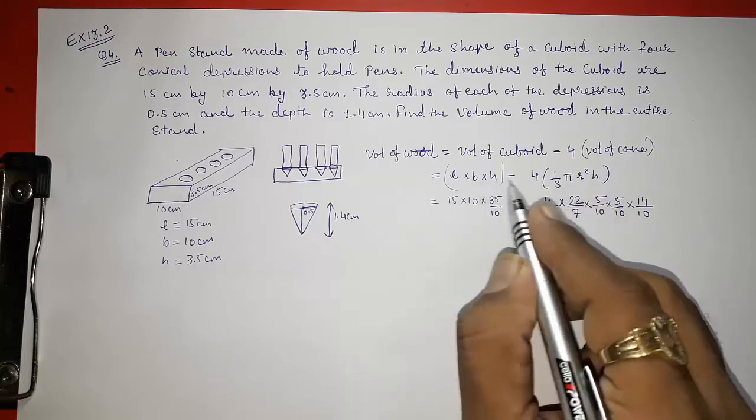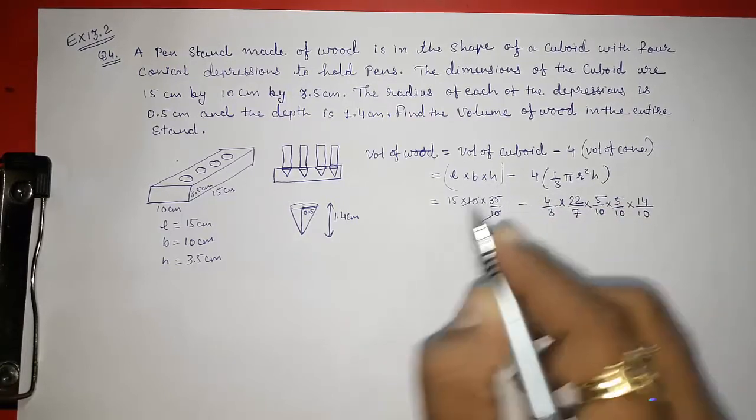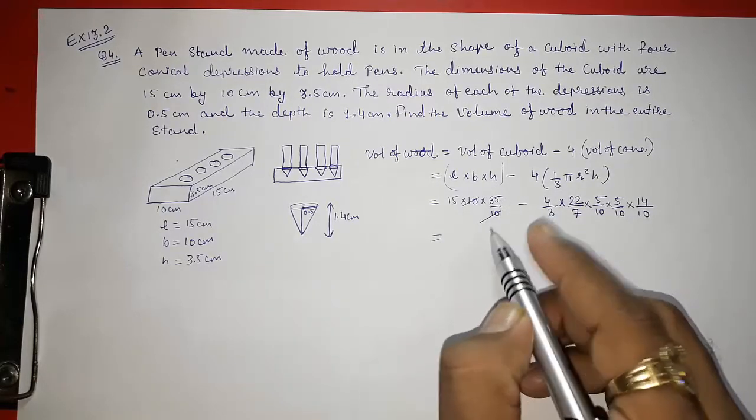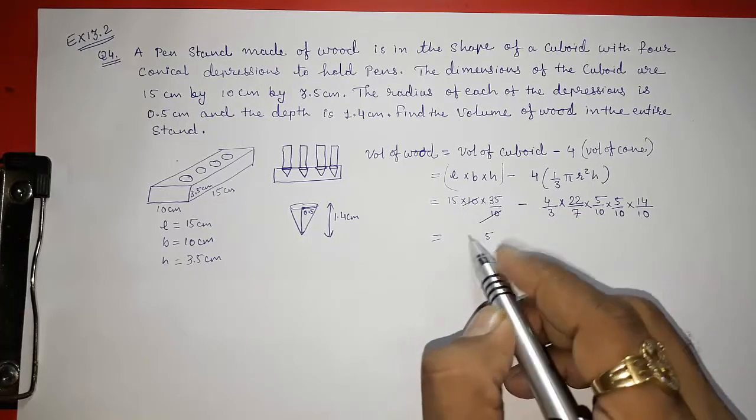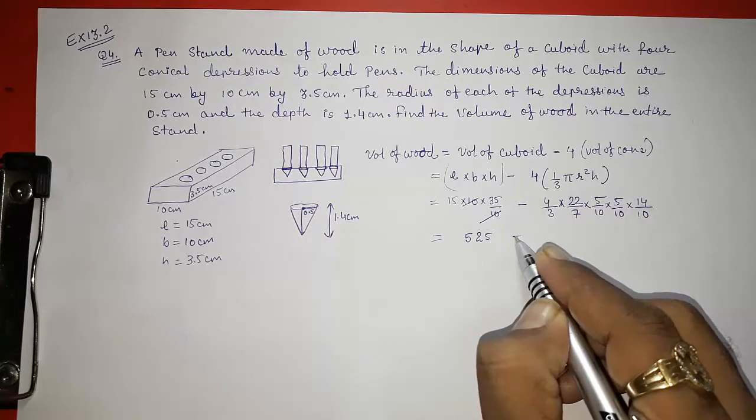Students are many type directly subtracting this. We cannot subtract this. First, we have to find this. I am going to cut this. Now we have to multiply. 15 into 5, so 15 into 5, 75. So 15, this is 45, 45 plus 7, 525.